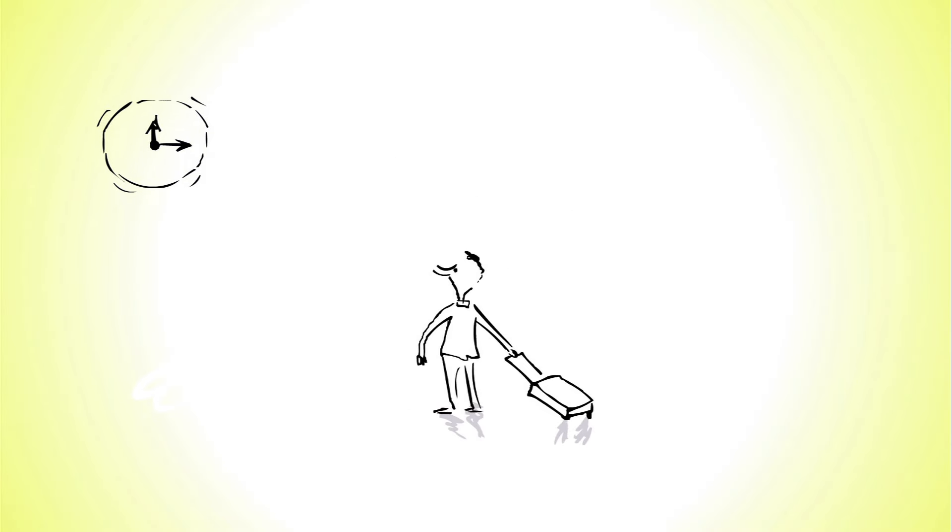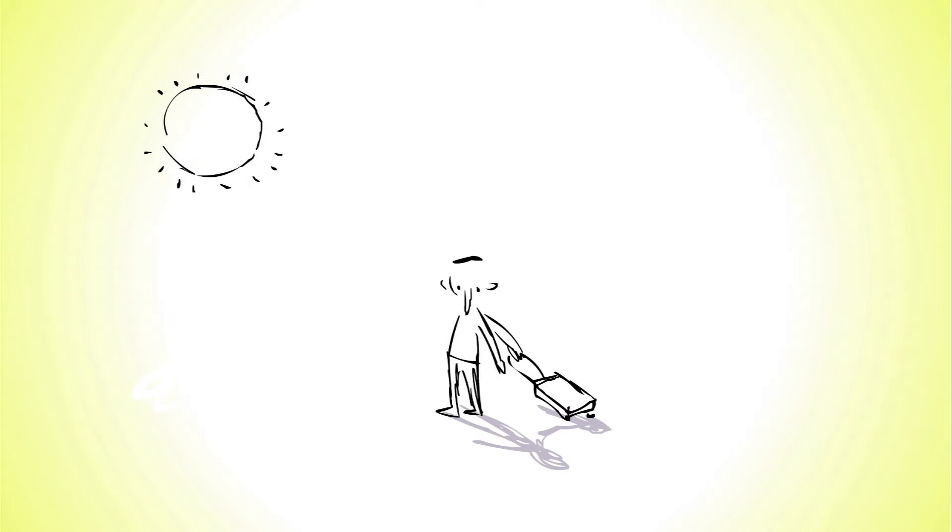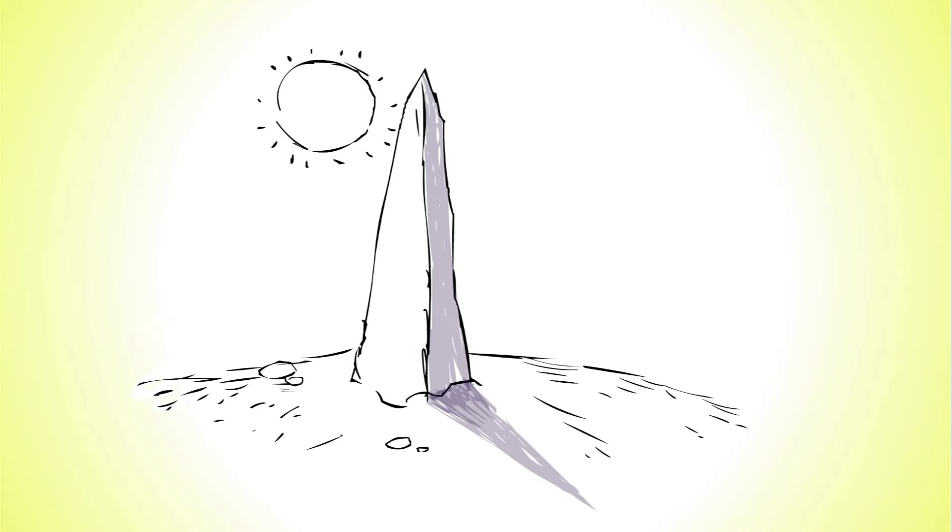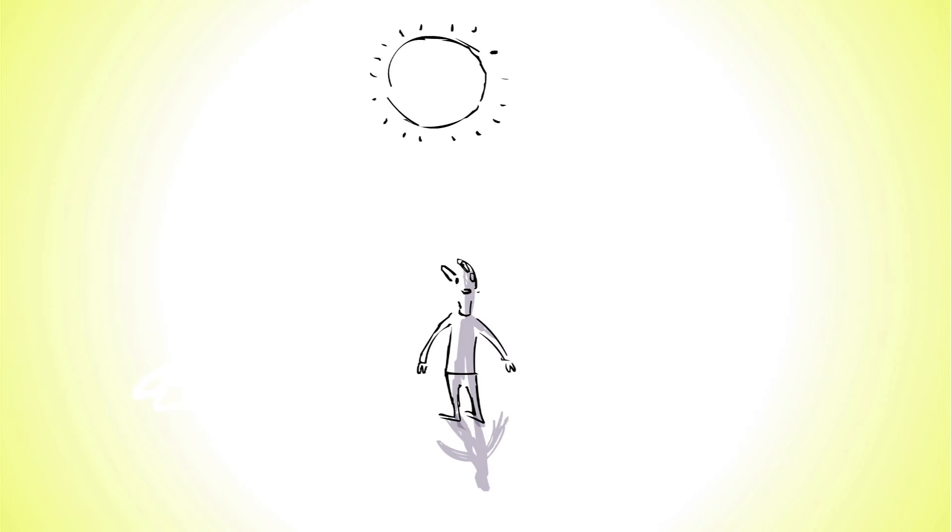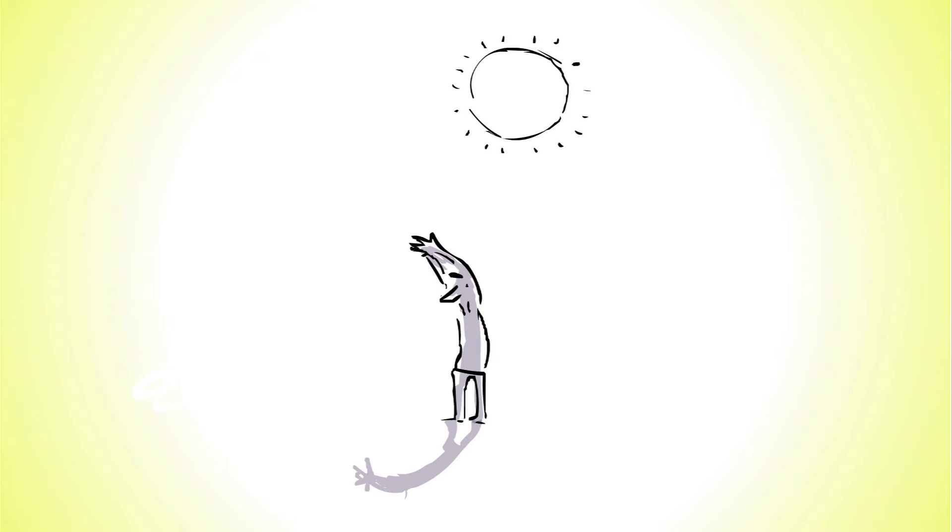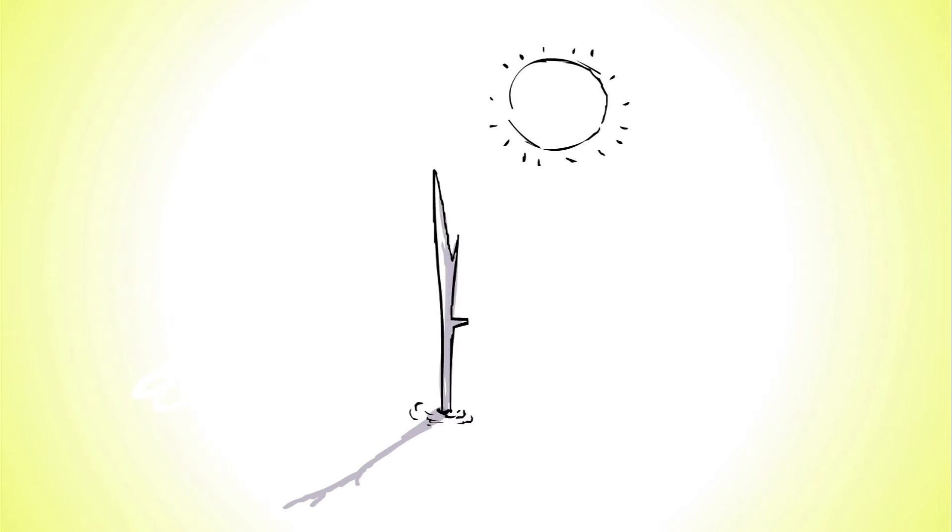The first form of telling time was the sundial, and the earliest sundials known from the archaeological record are obelisks from nearly 5,000 years ago. Sundials indicate the time by casting a shadow onto a surface. The object that casts the shadow is a stick in the center known as a gnomon.